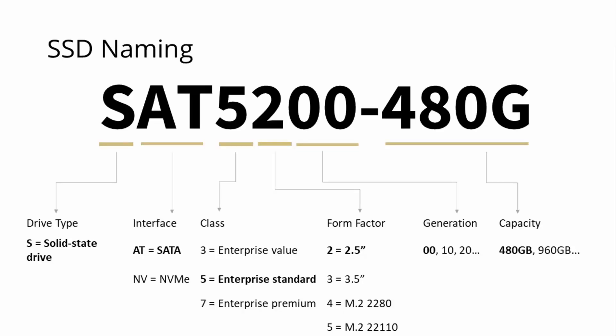When it comes to understanding the naming rules of our new segment: the first letter denotes the type of memory — S stands for solid state. The next two letters explain the interface, for example AT stands for SATA. The first number shows the class level of the drive, and the second number is the form factor. The zeros indicate the generation, as also introduced in our FS models. The last block of numbers and letters denotes the memory capacity in gigabytes.